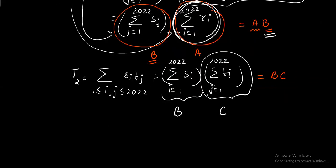What about the third term now? T_3 similarly can be simplified and you will notice that it ultimately converts to C multiplied by A, which is sigma t_i from i equals 1 to 2022 times sigma r_j from j equals 1 to 2022.